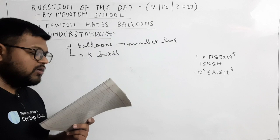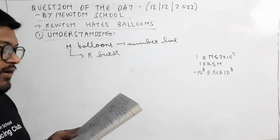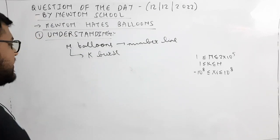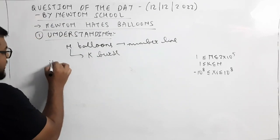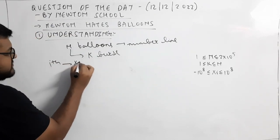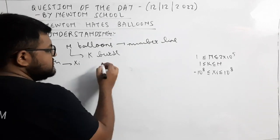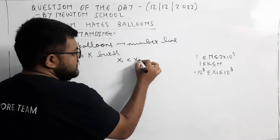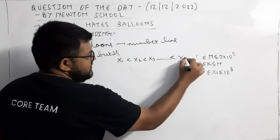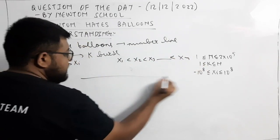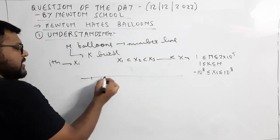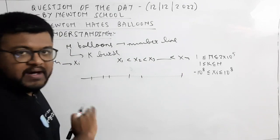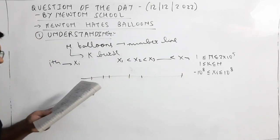The Ith balloon is placed on the coordinate XI, here X1 < X2 < X3 up to XN. कि Ith balloon जो है, वो coordinate XI पे placed है, इसी तरह से हर एक N balloons का हमें coordinate भी आ गया है, और X1 < X2 < X3 up to XN, मतलब कि balloons increasing order of the coordinates में हैं।